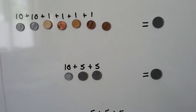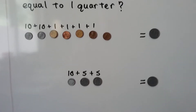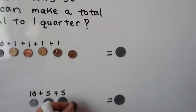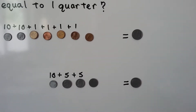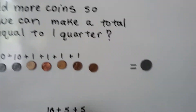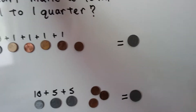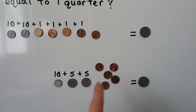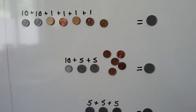We want it to be equal to a quarter. So what coins could we add to this to make it equal to a quarter? Well, we could add a nickel, couldn't we? We're at 20, and if we add a five, that would be 25. Do you know what else we could add? We could add five pennies — 20 and five pennies would be equal to a quarter. So we can either put a nickel there or we could put five pennies there and it would be equal to a quarter.